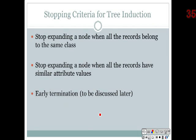Where to stop splitting? First, stop expanding a node when all records belong to the same class. Second, stop when all records have similar attribute values. Third, early termination — we'll discuss this in the next unit. Sometimes it's better to stop at a specific depth because going deeper can create huge splits that cannot handle new data well.